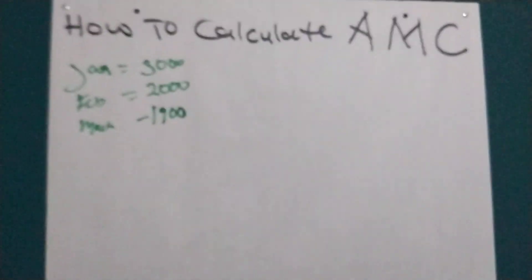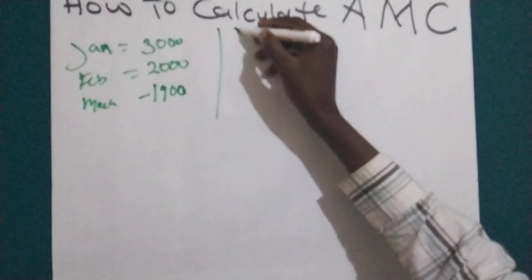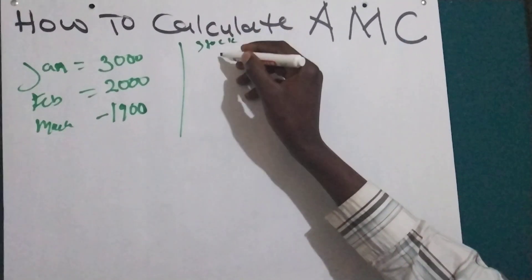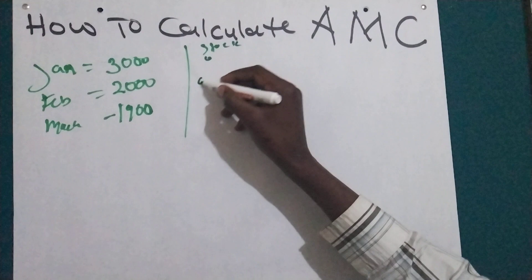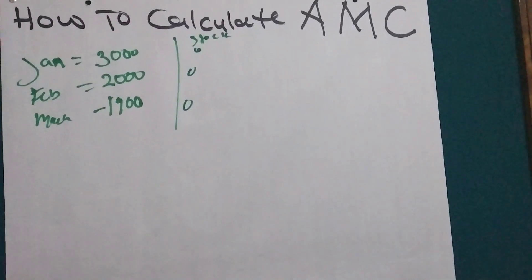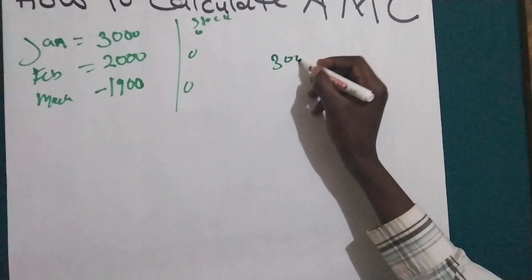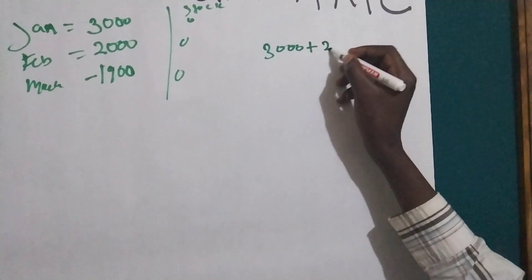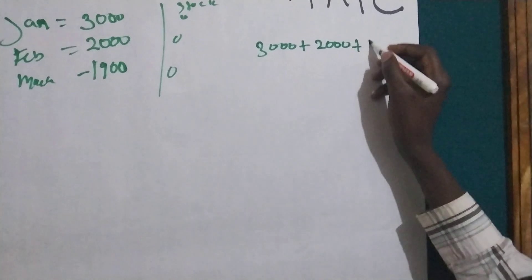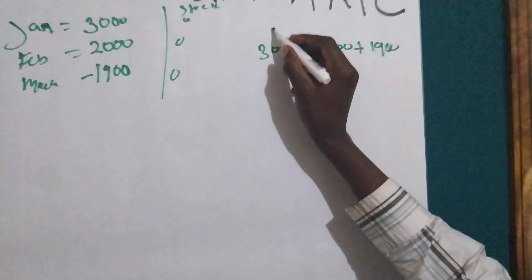In this scenario, there is no stock-out — stock-out is zero for all months. So what we are going to do is simple: we just add 3000 plus 2000 plus 1900 for January, February, and March.